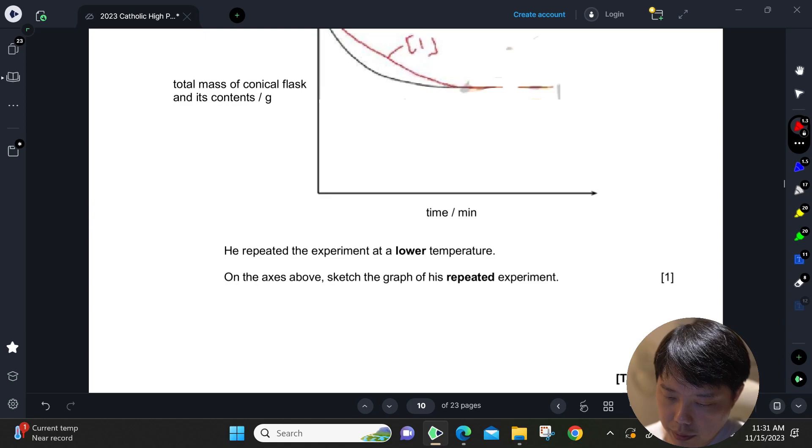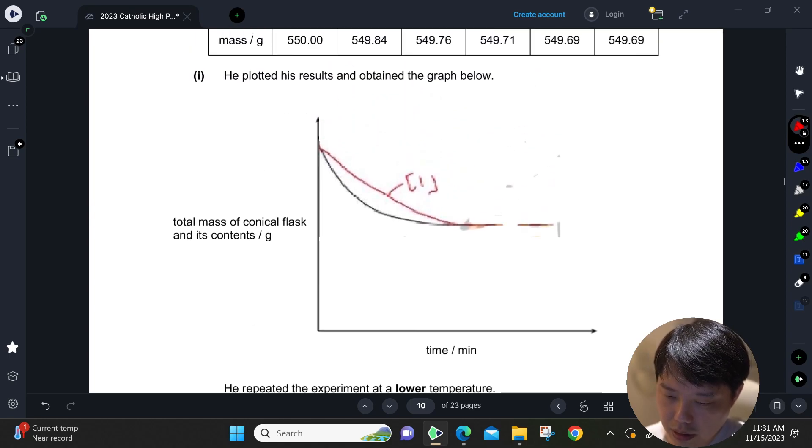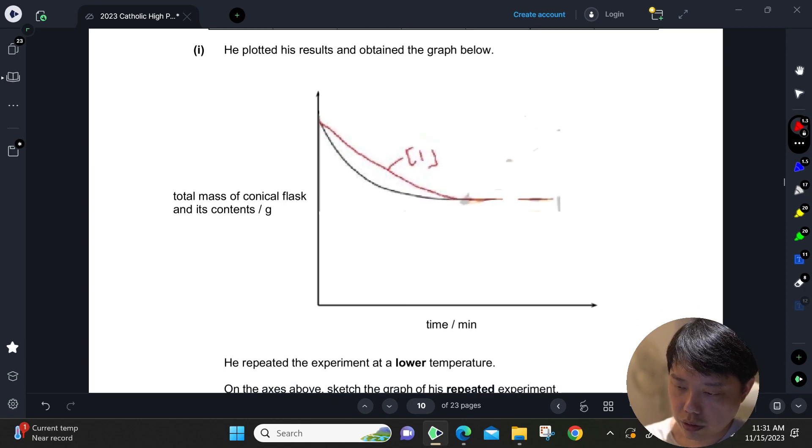Repeating the experiment at lower temperature, what is the graph of your repeated experiment? Basically, it's just a more gentle gradient because the rate is lower. Lower temperature results in lower rate of reaction.